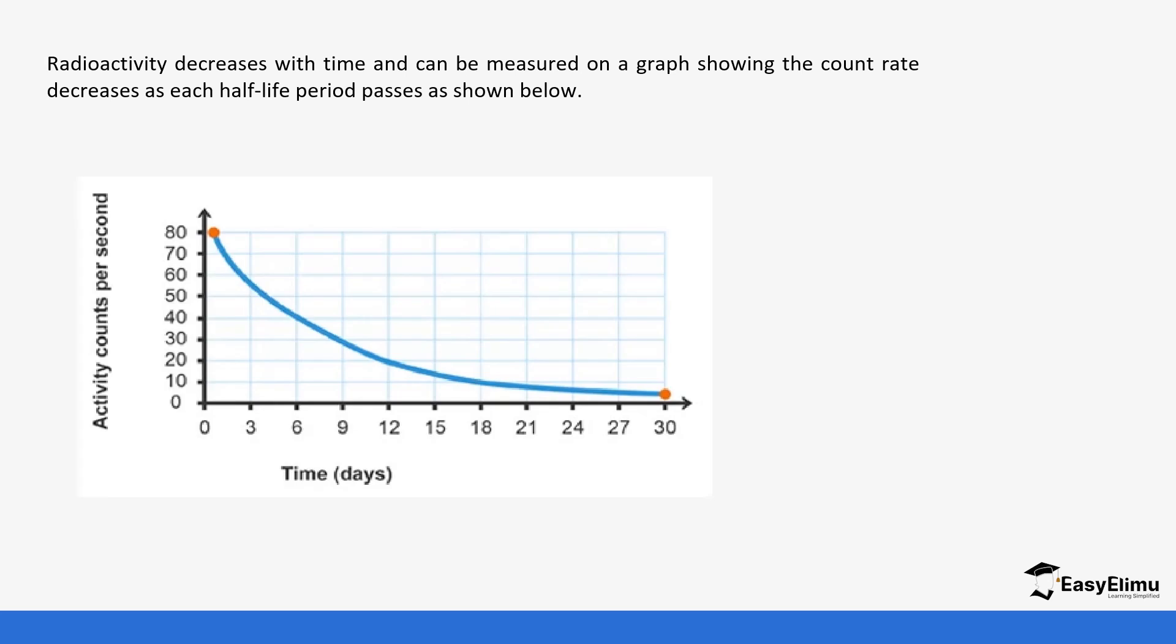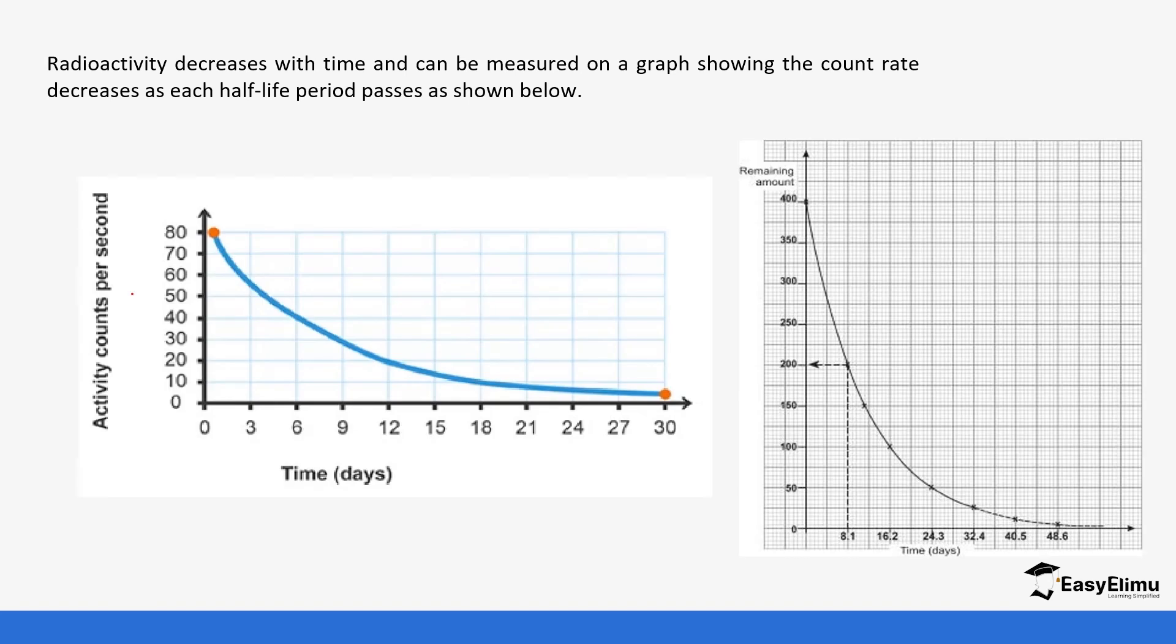It can be represented in graphical methods. You can see the count per second versus time. We start with 80 counts per second. If you were to look at half of those counts, it will take six days to achieve half of 80, which is 40. So six days is the half-life.